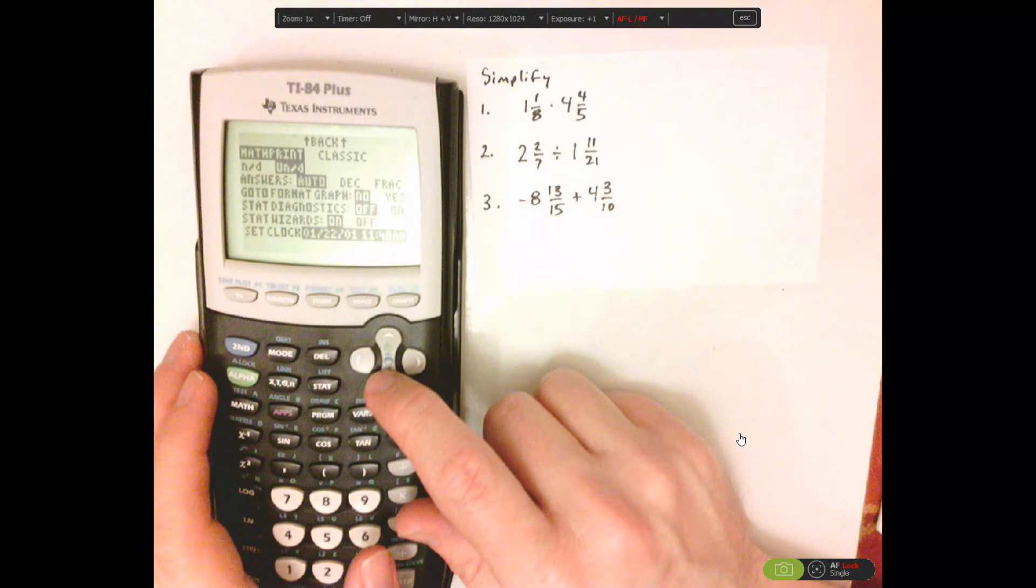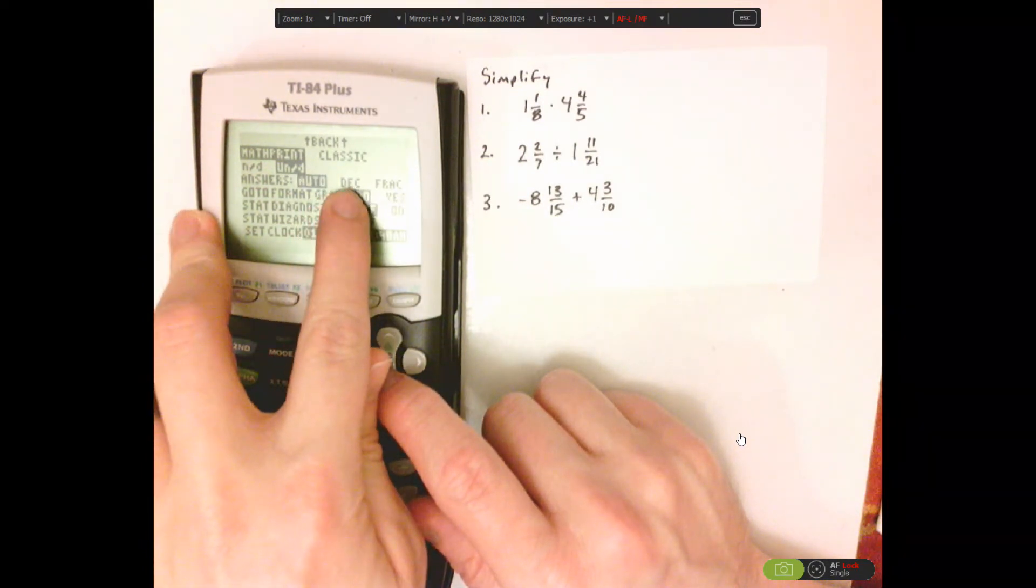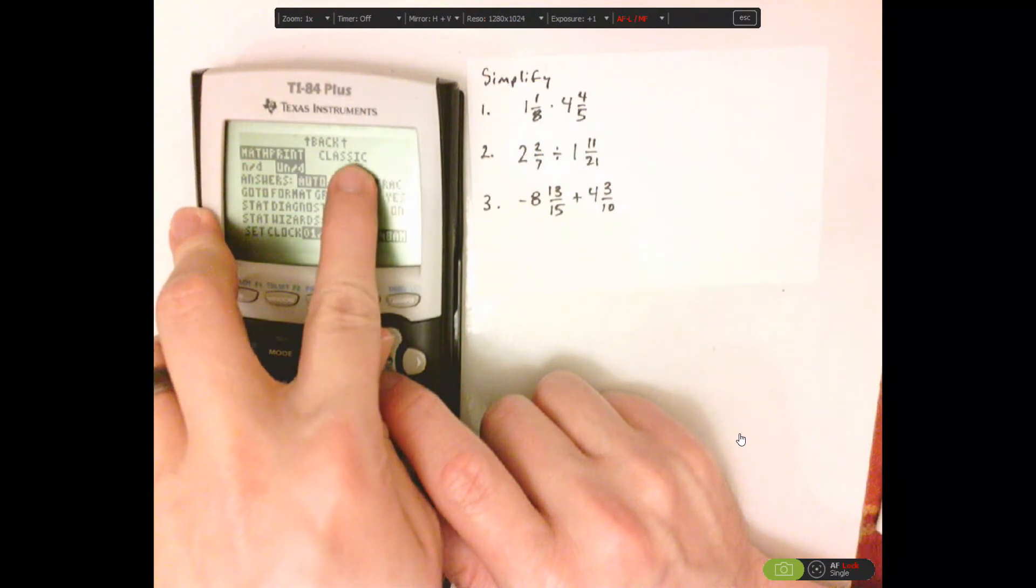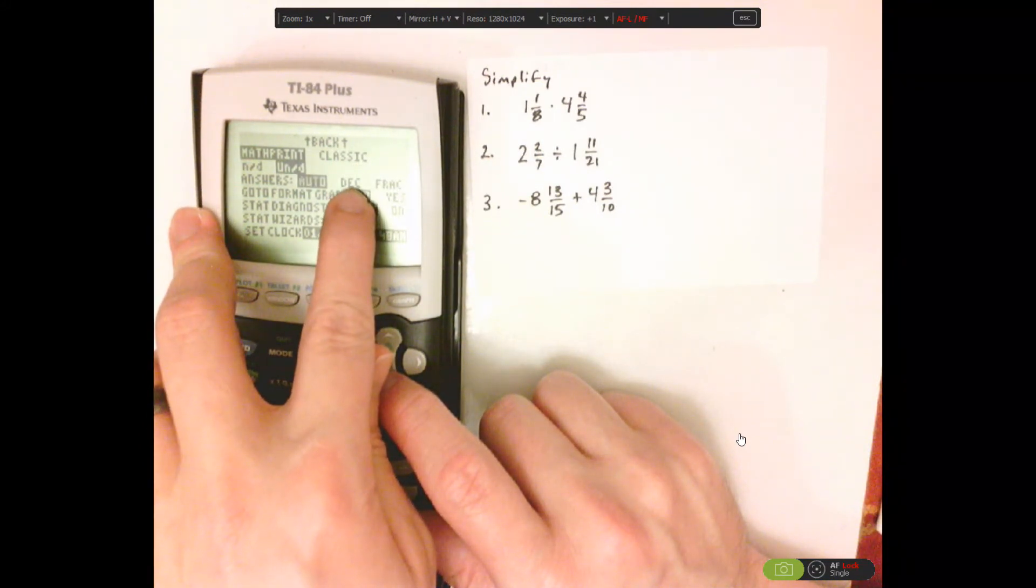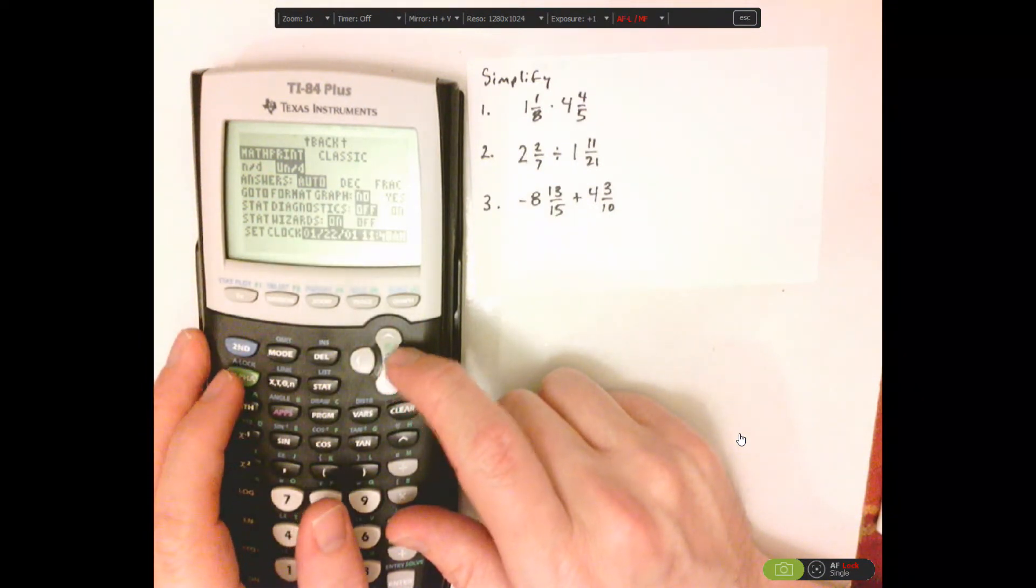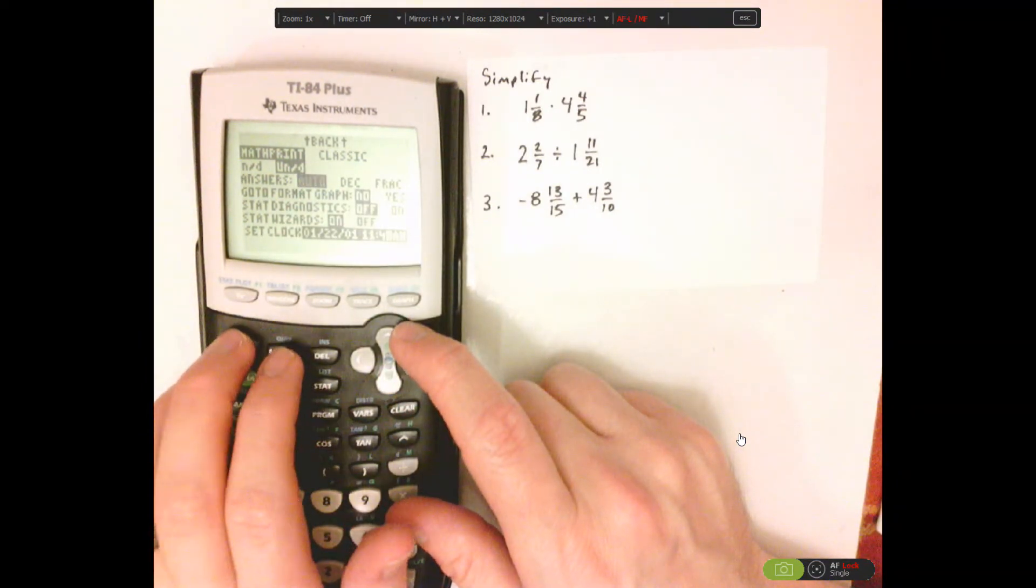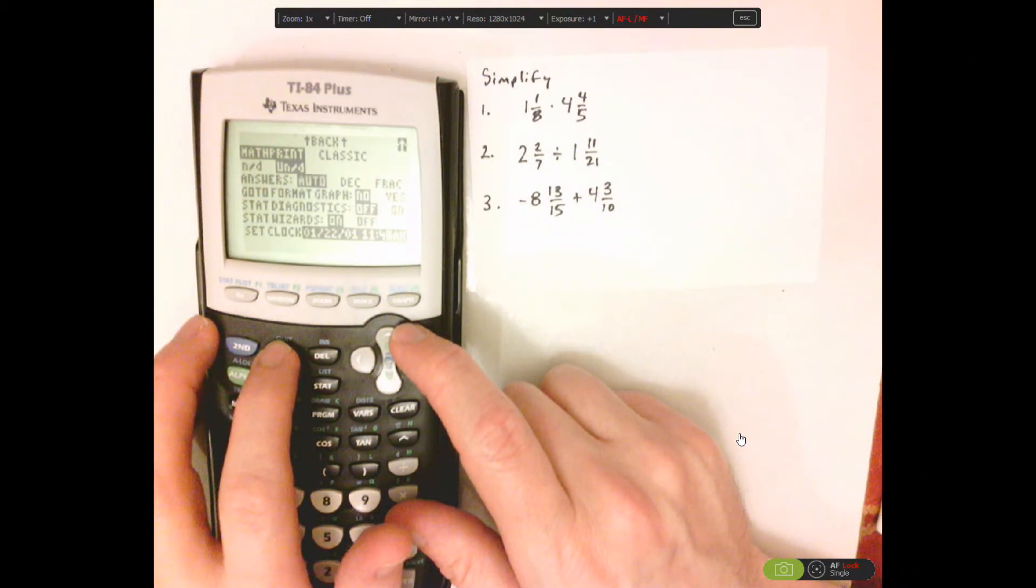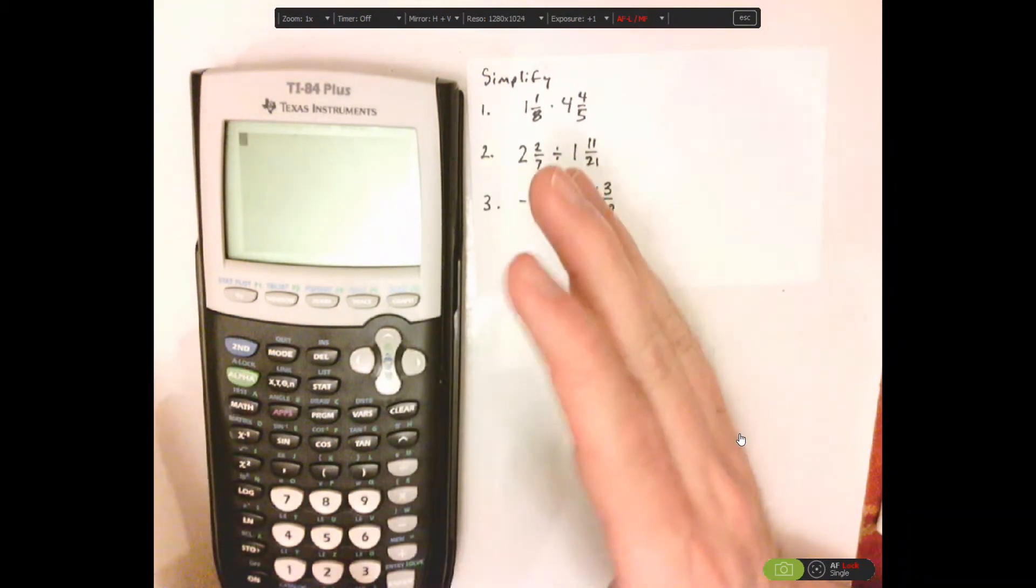Now, this is on auto, so you can either have it fixed to decimal or fraction. If it's in classic, you're always going to get a decimal. Alright, so I'm going to keep it on auto. Second, quit. So all those settings should be in place now.